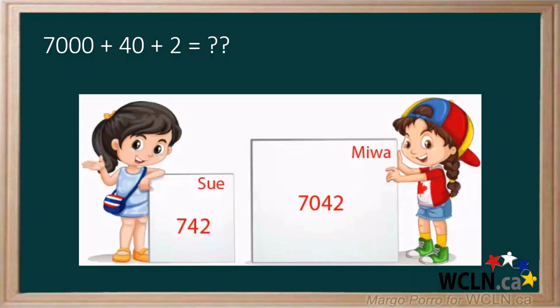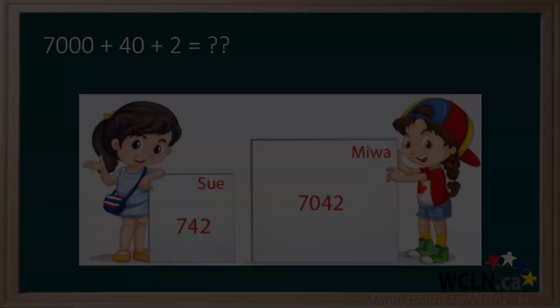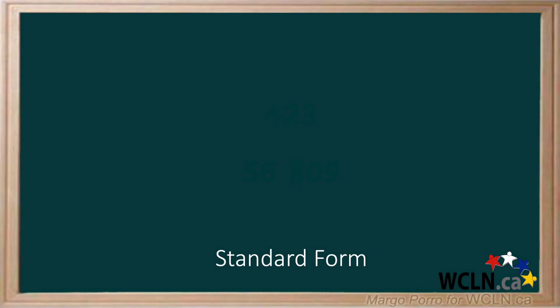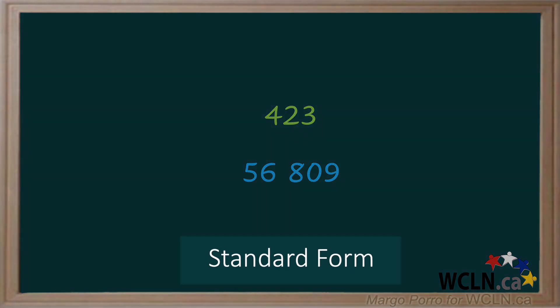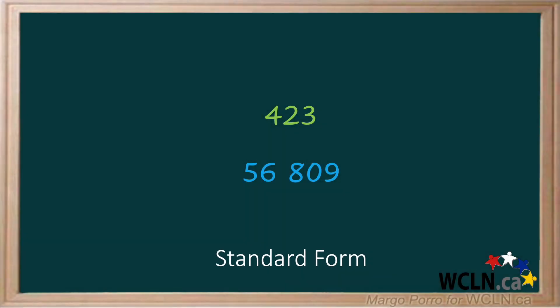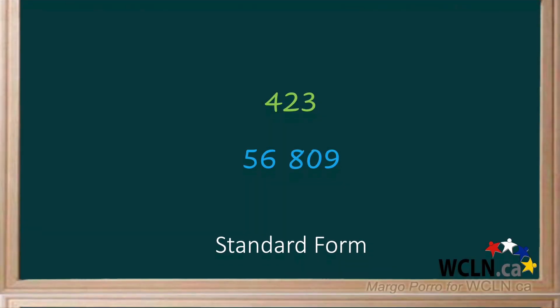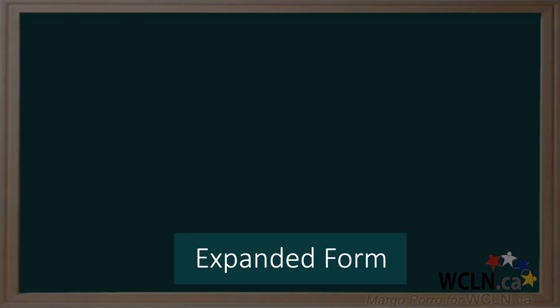To solve this you need to understand standard and expanded form. While this may sound complicated, it really isn't. We are used to seeing numbers a certain way — 423, 56,809. These numbers are written in standard form. What does it mean to expand numbers into expanded form?